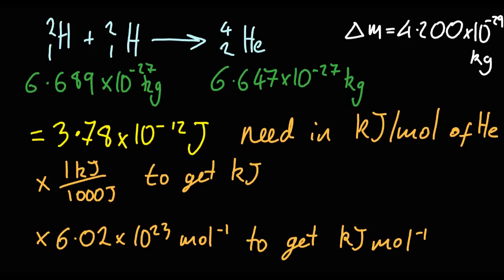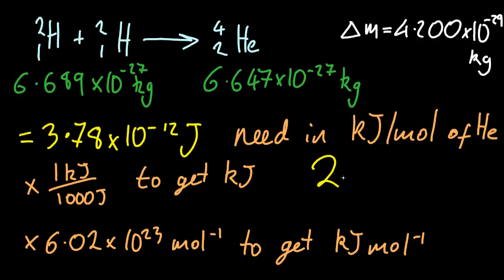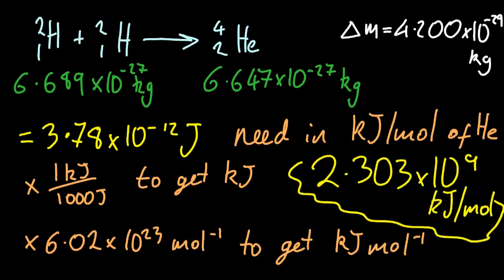So if I take my original number, divide it by 1,000, multiply it by 6 times 10 to the 23, that's my answer. That's how many kilojoules are produced when you make one mole of helium.